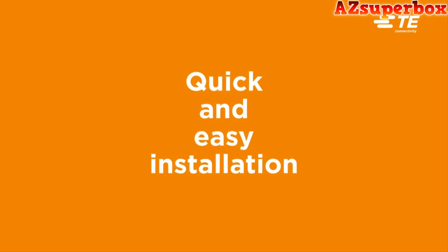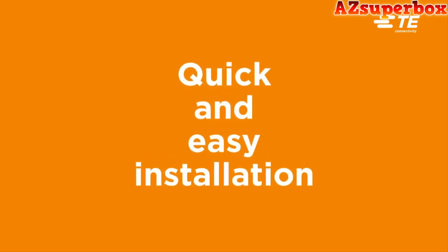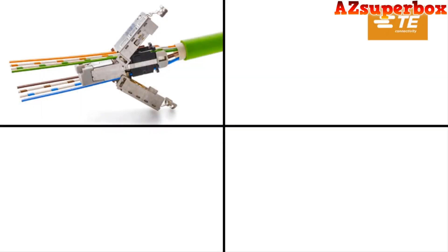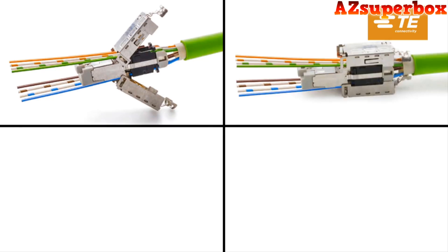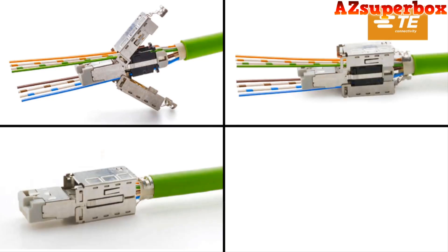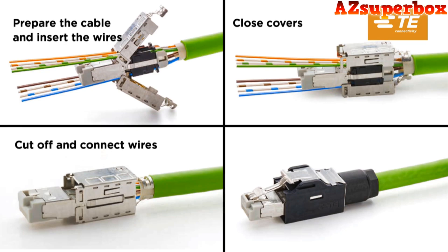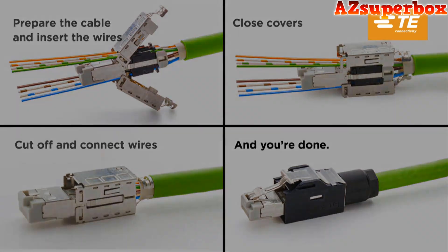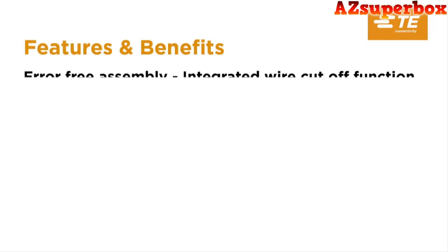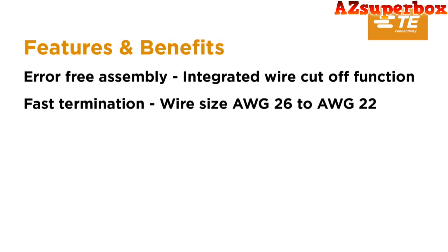Error-free installation can be done within a minute. Three easy steps for an optimal CAT 6A industrial connection: prepare the cable and insert the wires, close covers to cut off and connect wires, and you're done. Please contact your local TE representative for free samples to see the advantages first hand.